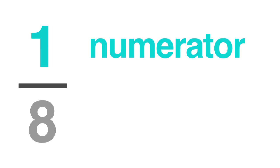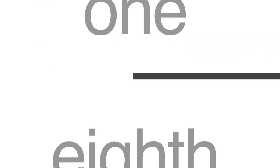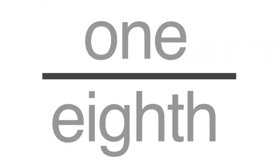When you read a fraction, you use regular numbers for the numerator. You use ordinal numbers — the numbers you use when you're putting things in order — for the denominator.